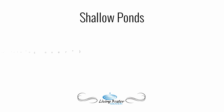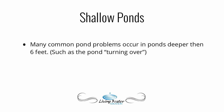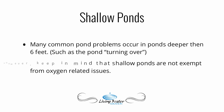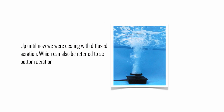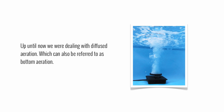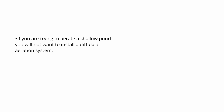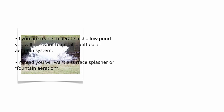Shallow ponds: many common pond problems occur in ponds deeper than 6 feet, such as the pond turning over. However, keep in mind that shallow ponds are not exempt from oxygen-related issues. Up until now, we were dealing with diffused aeration, which can also be referred to as bottom aeration. If you are trying to aerate a shallow pond, you will not want to install a diffused aeration system. Instead, you will want a surface splasher or fountain aerator.